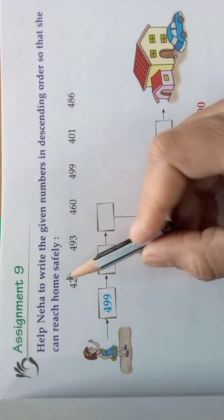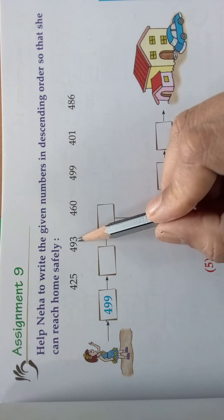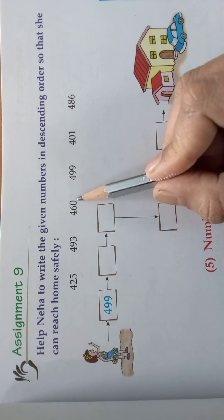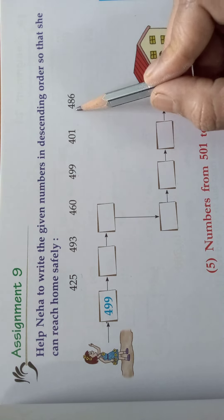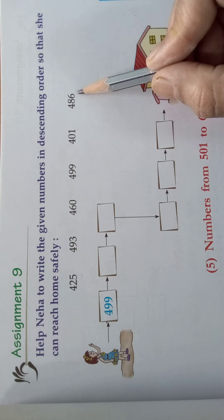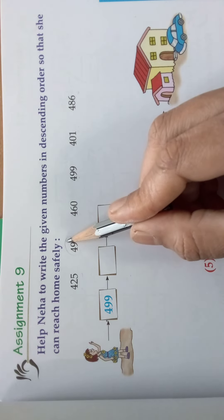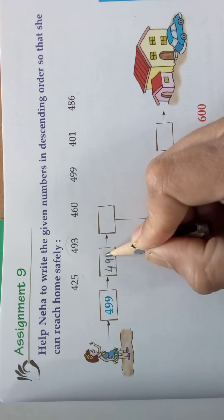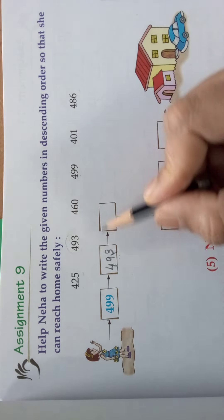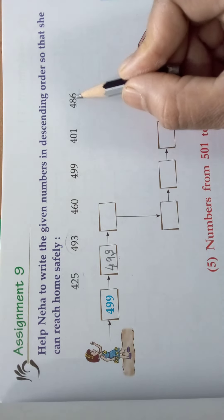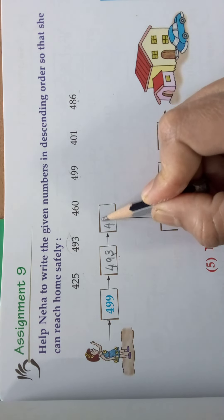First we will read all the numbers: 425, 493, 460, 499, 401, 486. So after 499, what is the next big number? 493. After 493, which is the big number? 486, because the others are already used. So 486.